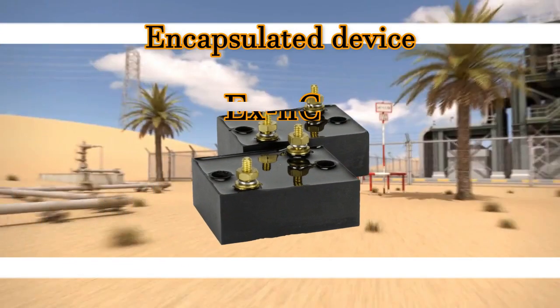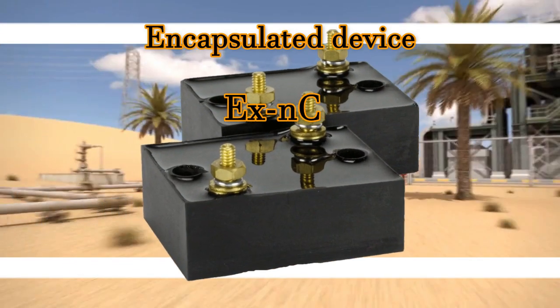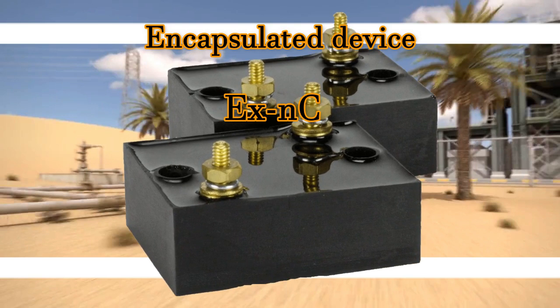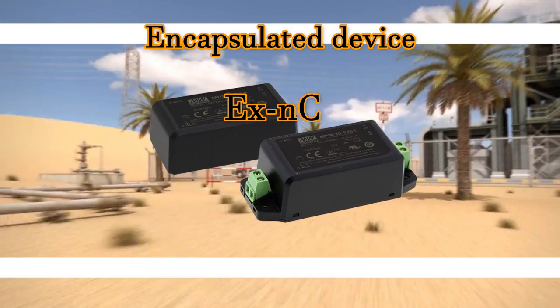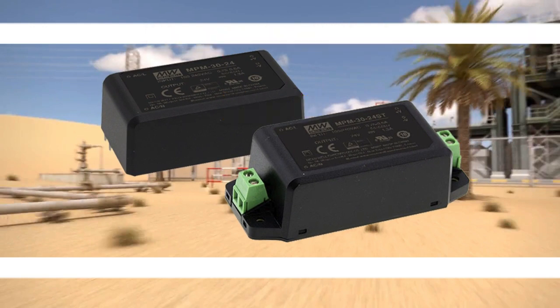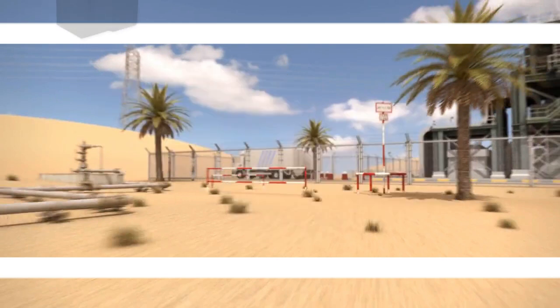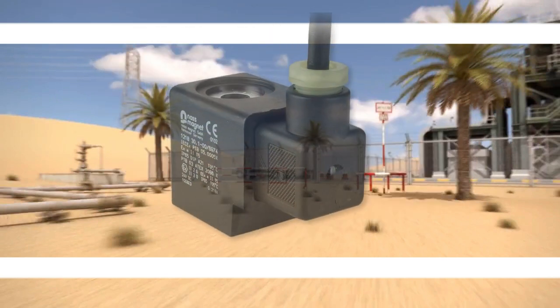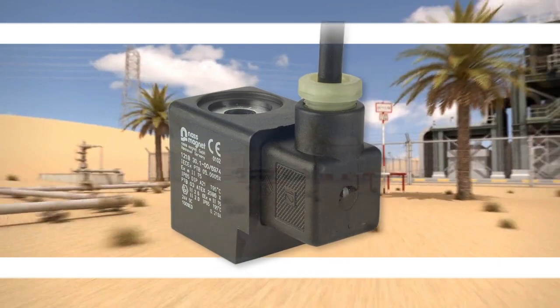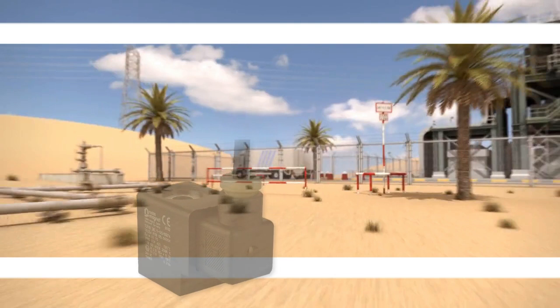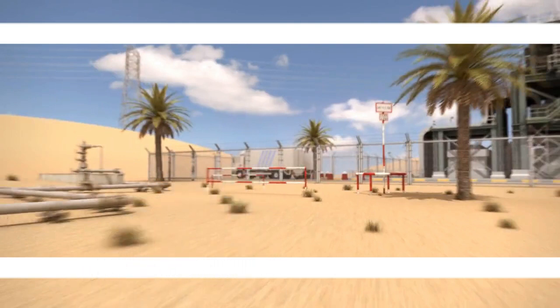Encapsulated device: the device in this instance will be totally sealed by an encapsulating material, typically epoxy resin, to prevent access of a flammable gas or vapor to an ignition source within. The encapsulant is required to have a continuous operating temperature 200 Kelvin greater than the marked maximum temperature and be free of intentional voids. The encapsulant should have a minimum thickness of 3 millimetres, or not less than 1 millimetre if the free surface area is less than 200 millimetres squared.